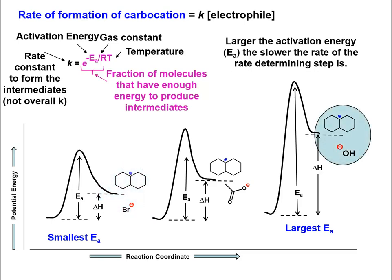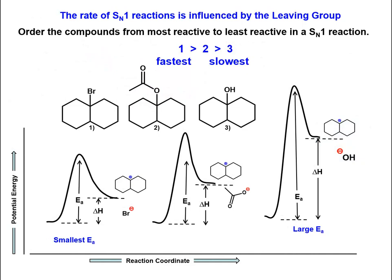The hydroxide ion is the worst leaving group, and the activation energy for this reaction will be very high. Thus compound 1 would undergo an SN1 reaction more readily than compound 2, and the alcohol would be the least reactive, and under normal conditions would not occur.